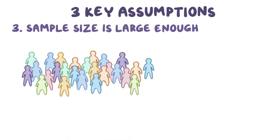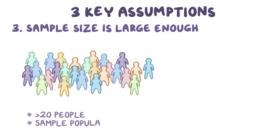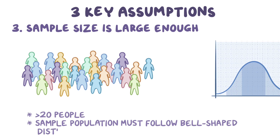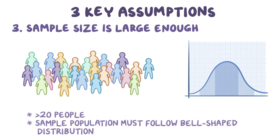The third assumption is that the sample size is large enough to approximate the target population, which usually means having more than 20 people. If it's impossible to get a large sample size, then the sample population must follow a normal bell-shaped distribution for the characteristic being studied, because that's what we'd normally expect to see in the target population.